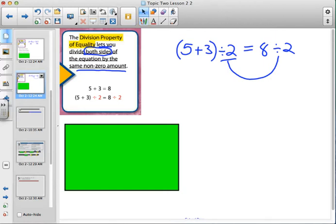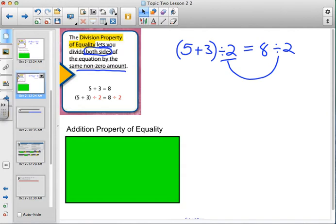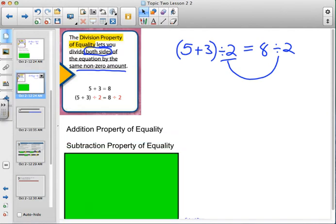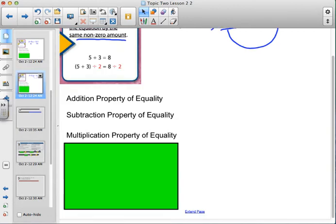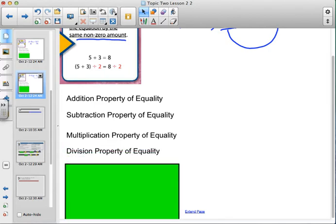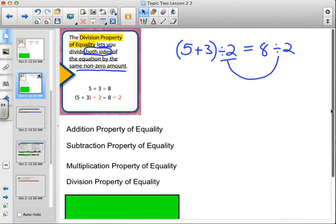Okay. So, somebody tell me, what was the first property that we learned? Abram? Addition. Well, the addition property of equality, right? What was the second one we learned? The subtraction property of equality. What's the third one, Lexi? The multiplication property of equality. And the fourth one, Colin? The division property of equality. Yes. So, we've got all of those covered now. All right?